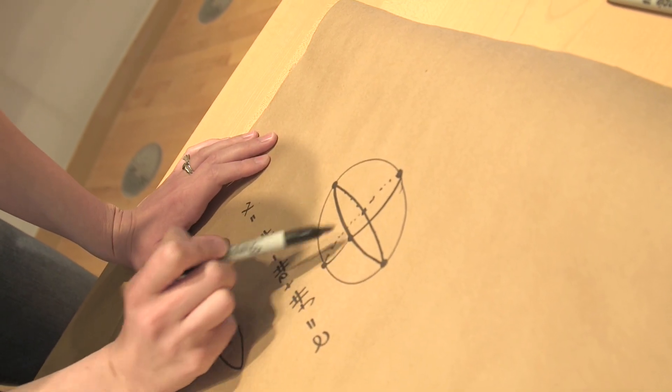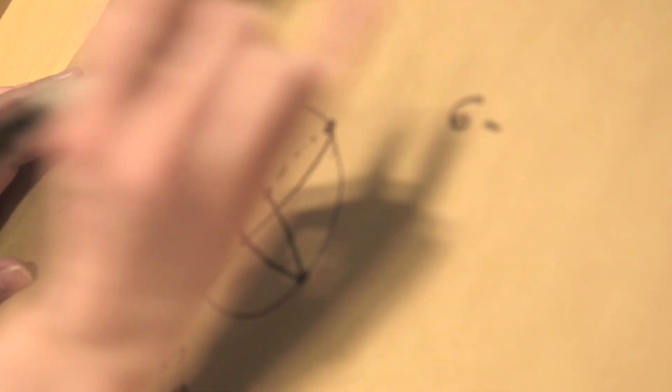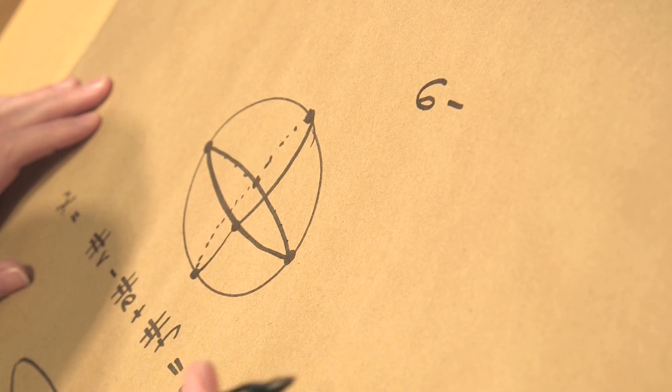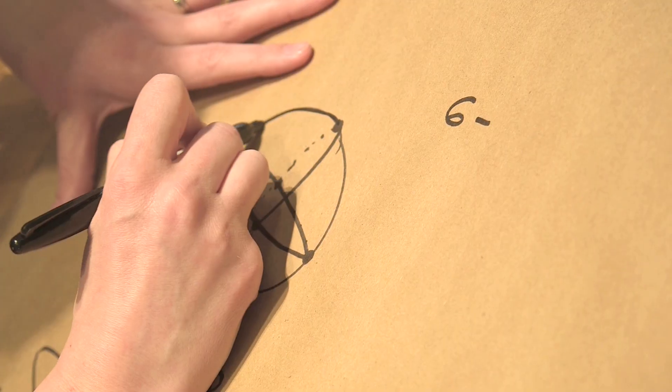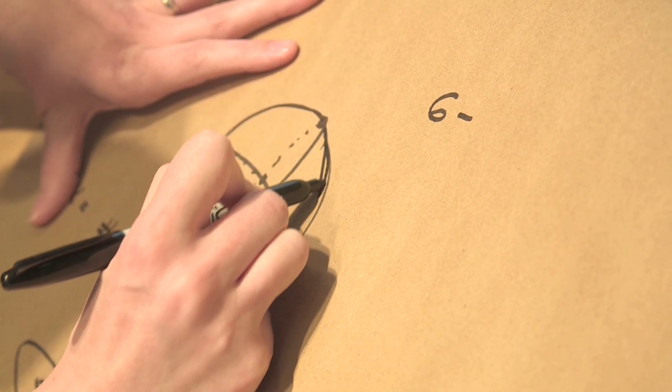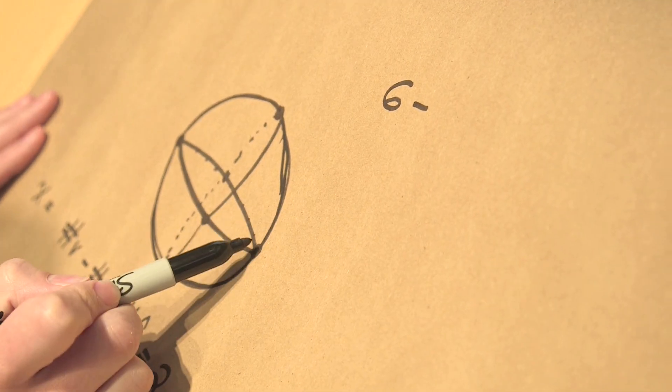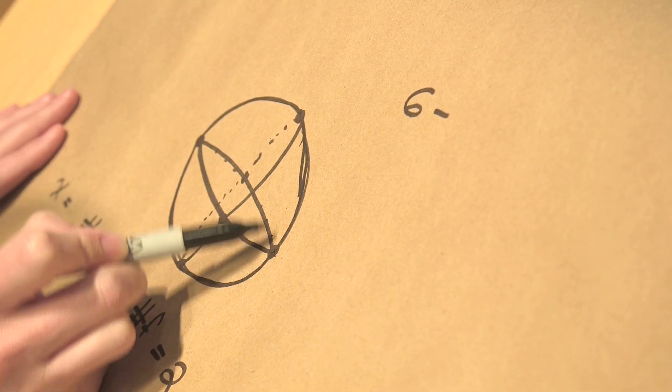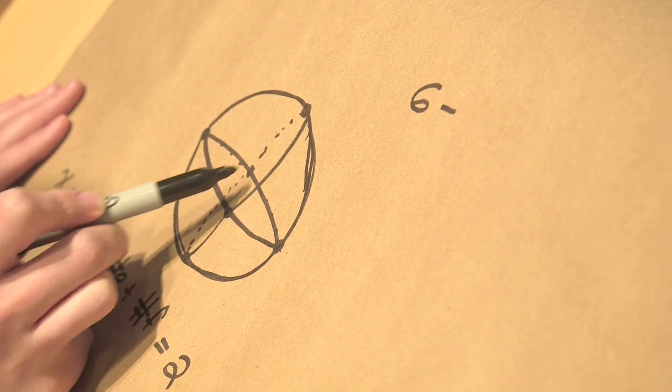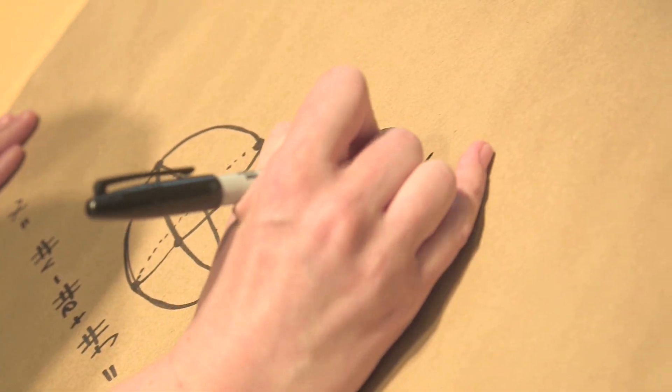But let's count again. So I have one, two, three, four, five, six vertices now minus the number of edges. Let's fill in this edge and this edge because otherwise it's confusing the way I've drawn it. This edge and this edge. I gotta count edges. Let's make sure we don't forget any. One, two, three, four, five, six, seven, eight, nine, ten, eleven, twelve. Twelve edges.